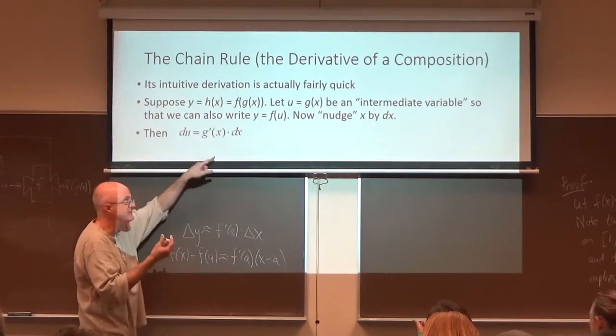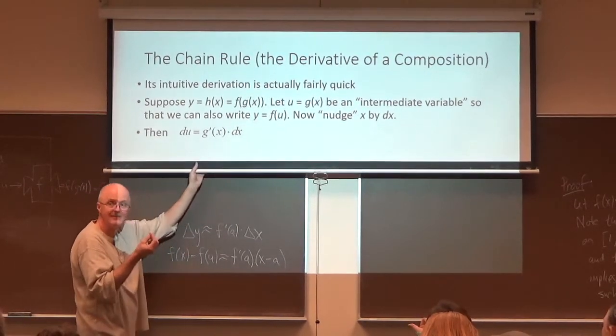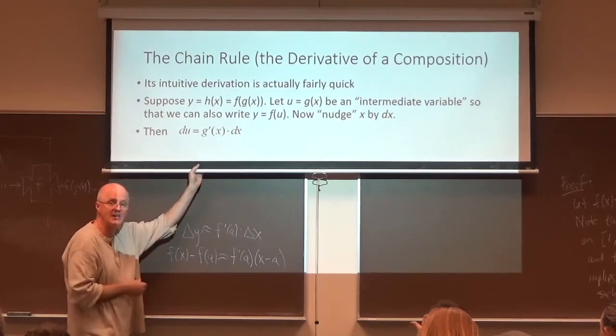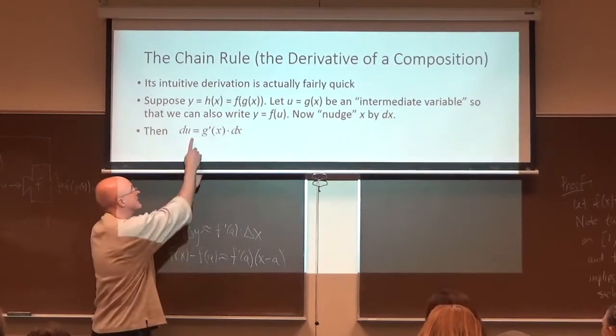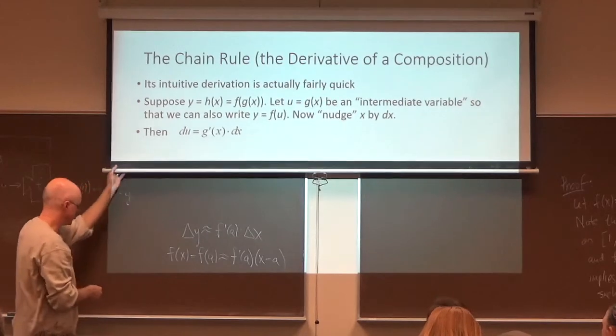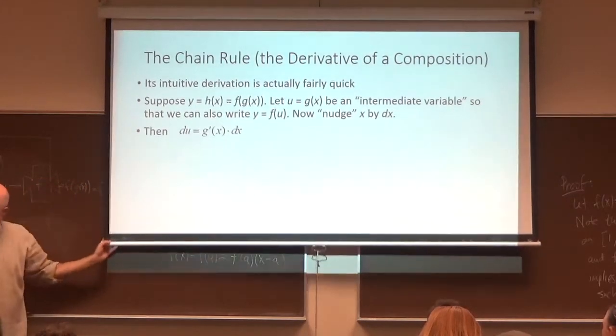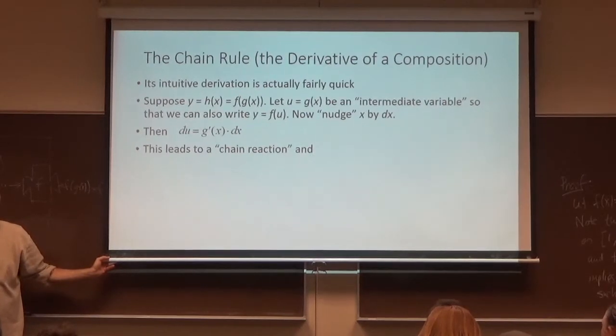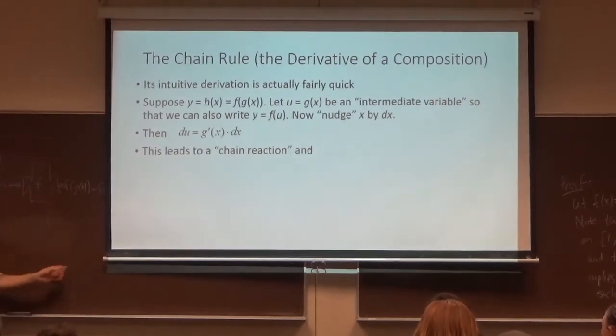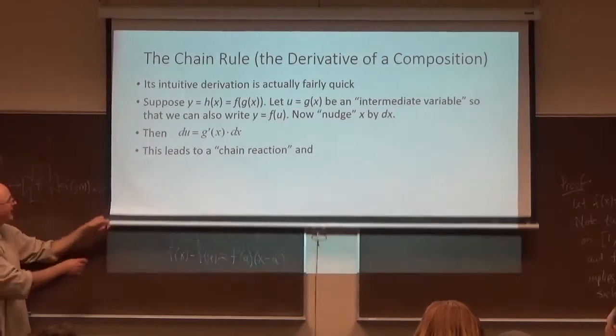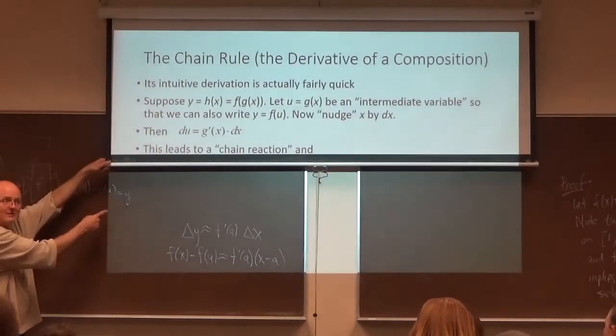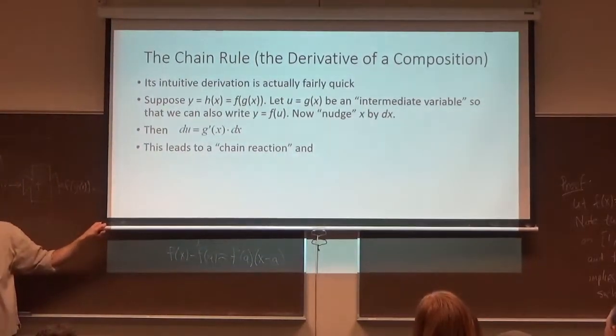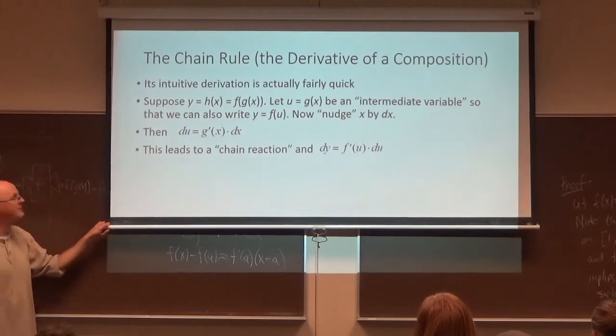Pretend these are exact equalities because dx is so tiny that this really does give you the exact change in the function. The function g in this case, which is du. This leads to a chain reaction. If u changes a little bit, then so does y. Because y depends on u. You can also write that. dy is f prime of u du.